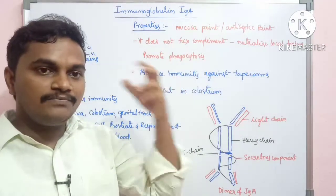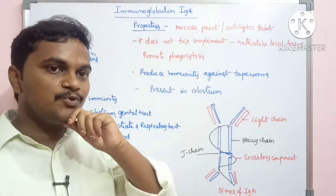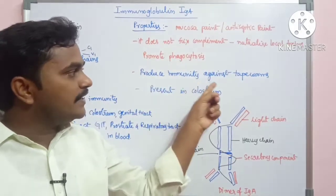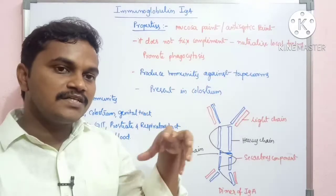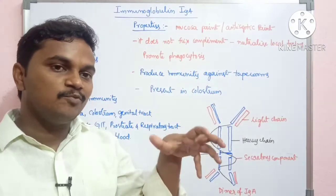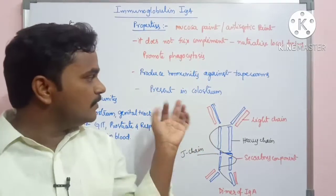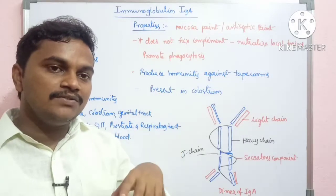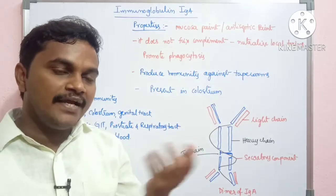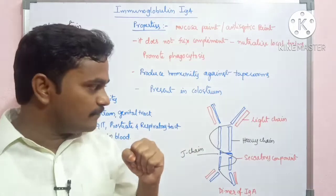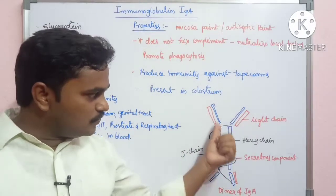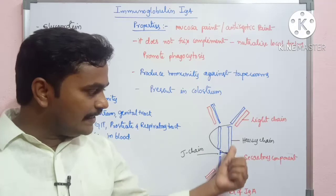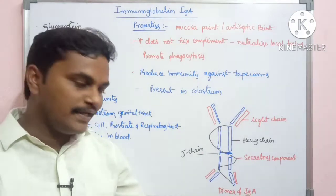IgA promotes phagocytosis. It also produces immunity against tapeworms in the intestine. IgA is present in colostrum, so a mother's colostrum transfers IgA antibodies to the newborn.